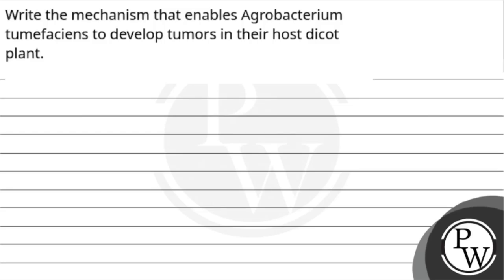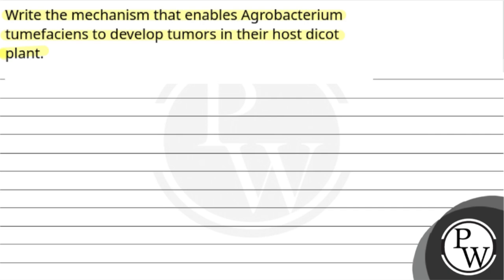Hello children. Let us read the question: Write the mechanism that enables Agrobacterium tumefaciens to develop tumours in their host dicot plants. So the question is, how does Agrobacterium tumefaciens, which is a type of bacteria, cause a tumour in plants?